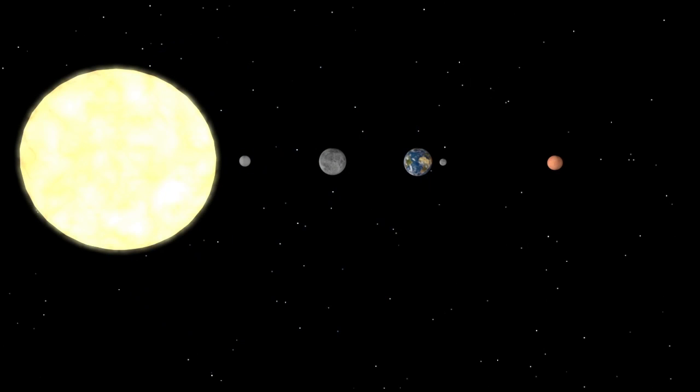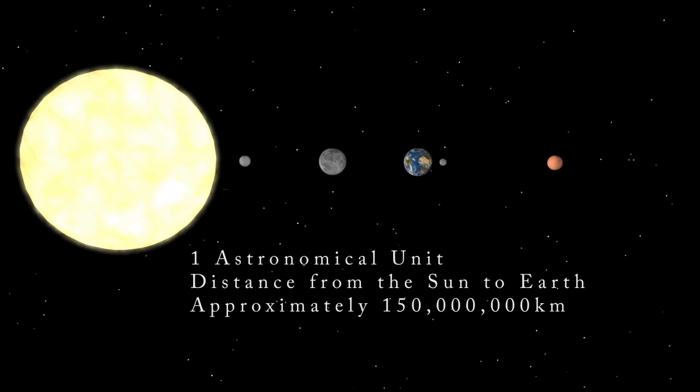Distances in space are extremely large, so astronomers have created a unit called an astronomical unit. One AU is defined as the average distance from the Earth to the Sun, and is slightly less than 150 million kilometers, or over 3,700 times the circumference of the Earth. Mercury, the closest to the Sun, is only 0.4 AU from the Sun, whereas Neptune is a little over 30 AU from the Sun.